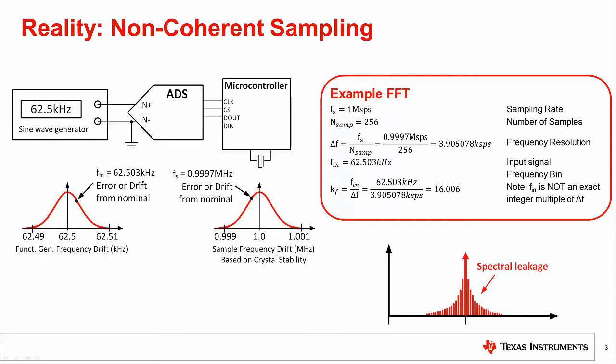The reality of most equipment is that the signal generator output frequency and microcontroller clock frequency do not have the accuracy and stability to facilitate coherent sampling. Notice that the sine wave generator is adjusted to 62.5 kilohertz, but the actual output frequency is 62.503 kilohertz. Furthermore, the output frequency of this generator drifts with time and temperature. A similar phenomena exists with the microcontroller clock rate.